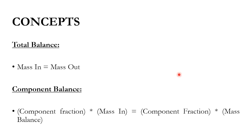The basic concepts: the total balance states that mass in equals mass out. For the component balance, the component fraction multiplied by mass in — across one, two, three, or four streams — equals the component fraction multiplied by mass out. If a component is absent from a stream, its fraction is zero for that stream.